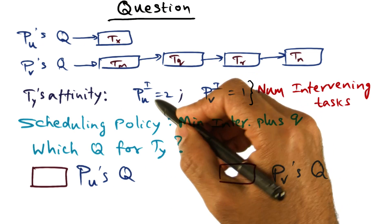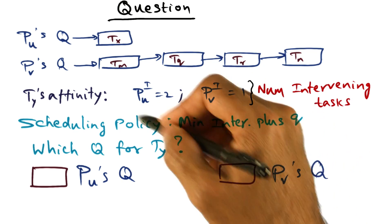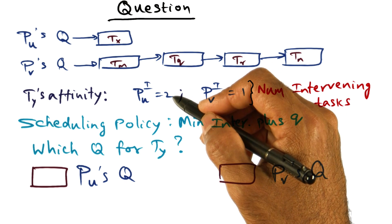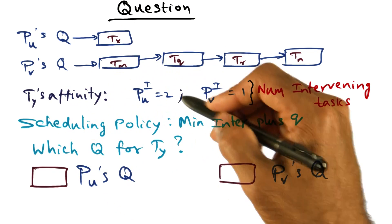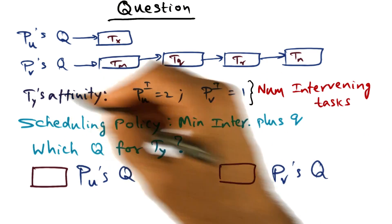The affinity of T_y with respect to P_u is 2. This is the intervening thread index. And I mentioned to you that the smaller the index, the higher the affinity. So P_u_i for T_y is 2, and similarly P_v_i for T_y is 1.